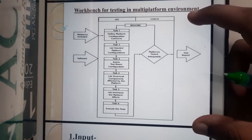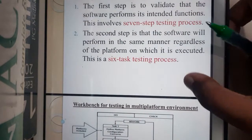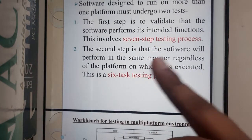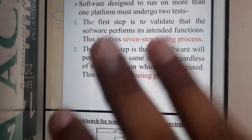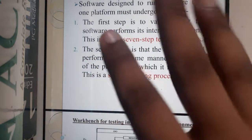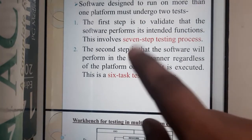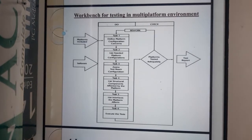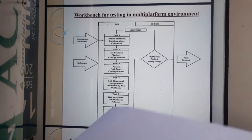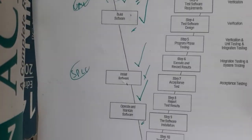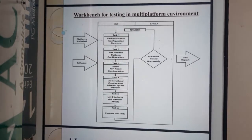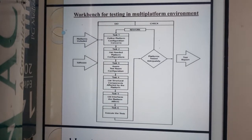Here is the workbench diagram for this topic. Before going into the testing, you need to cross-check whether your application follows the V-shaped process — that is, the eleven steps we discussed previously. Your application should follow that diagram first, and only then can you think of testing it on multiple platforms.